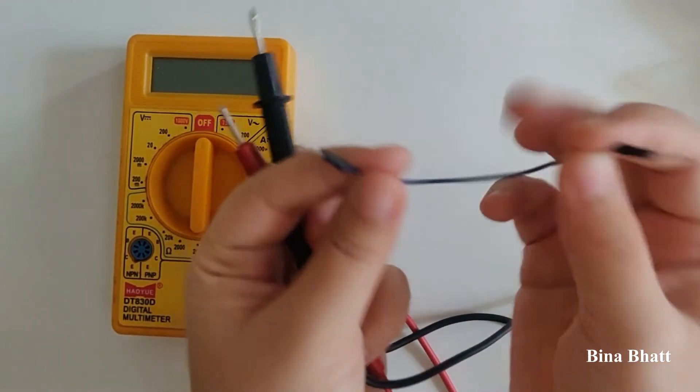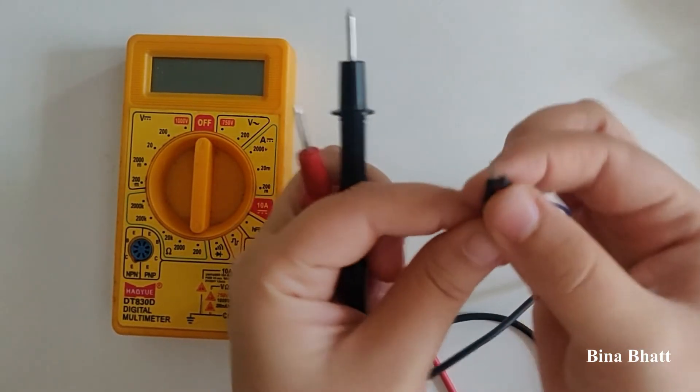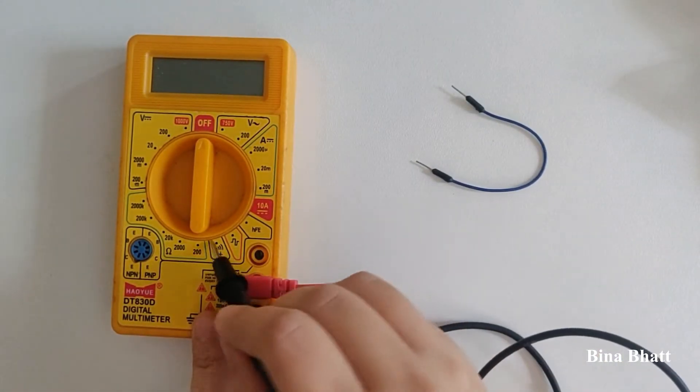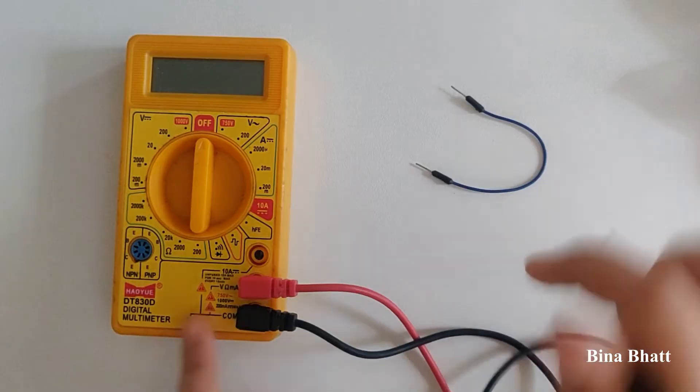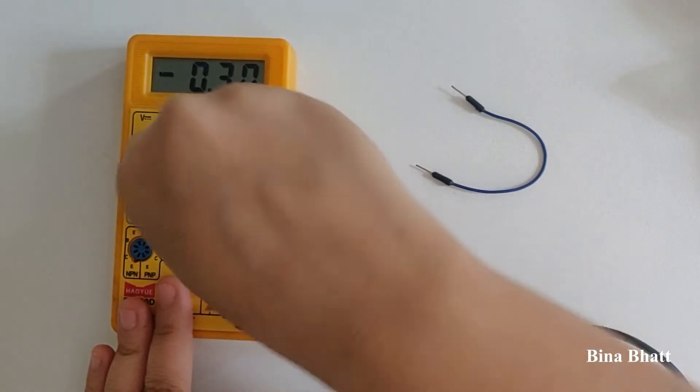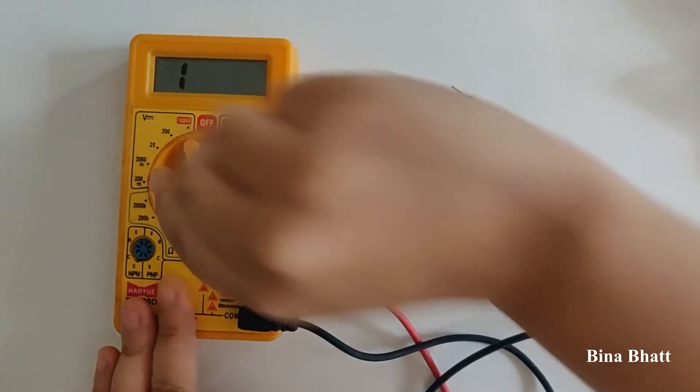Next we're going to check for continuity. For that I've got this wire. This is the continuity mode - you can see the speaker sign. Diode testing and continuity are provided in the same place.